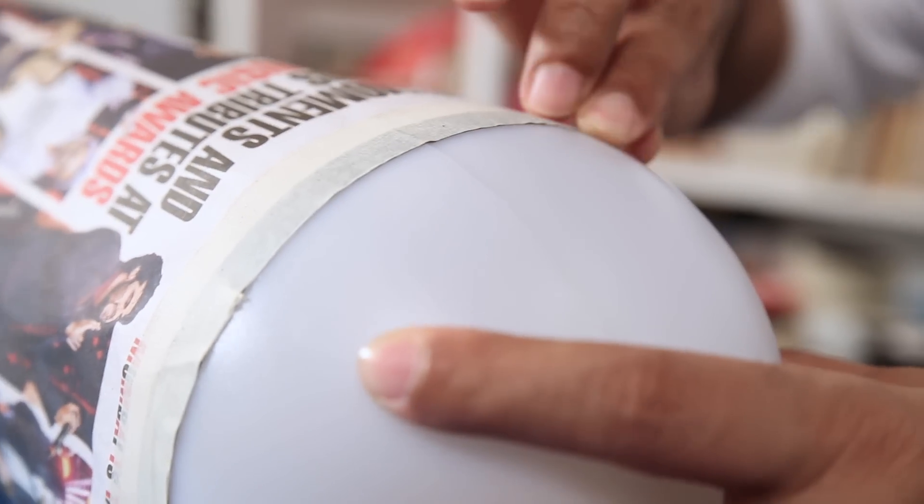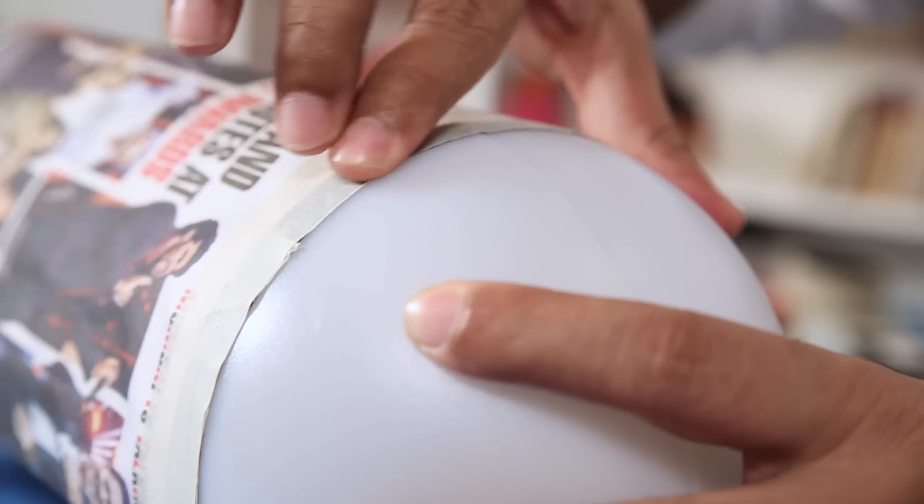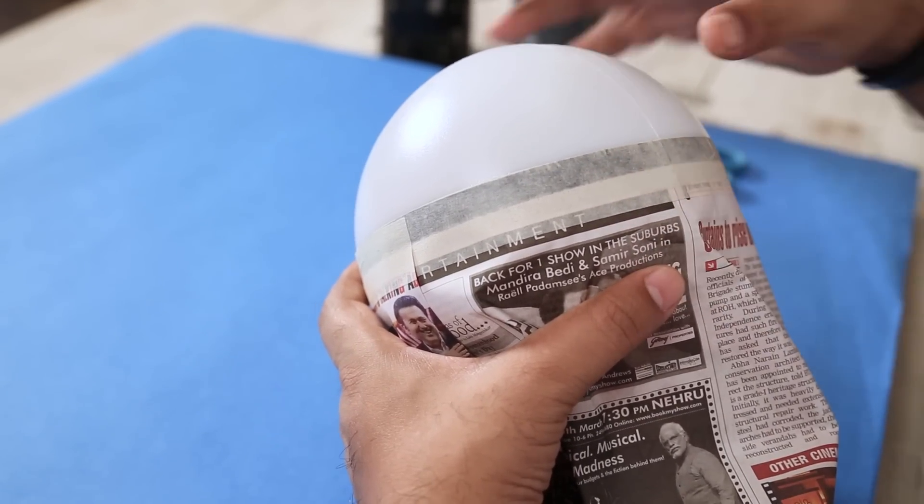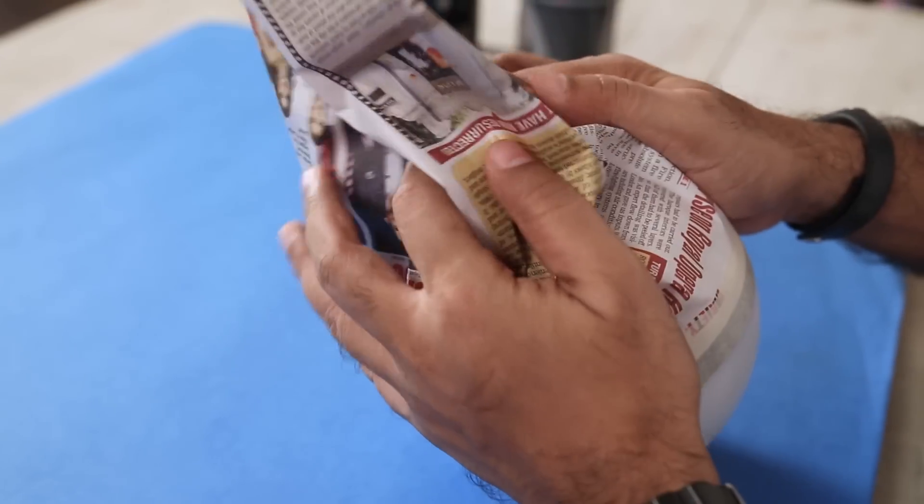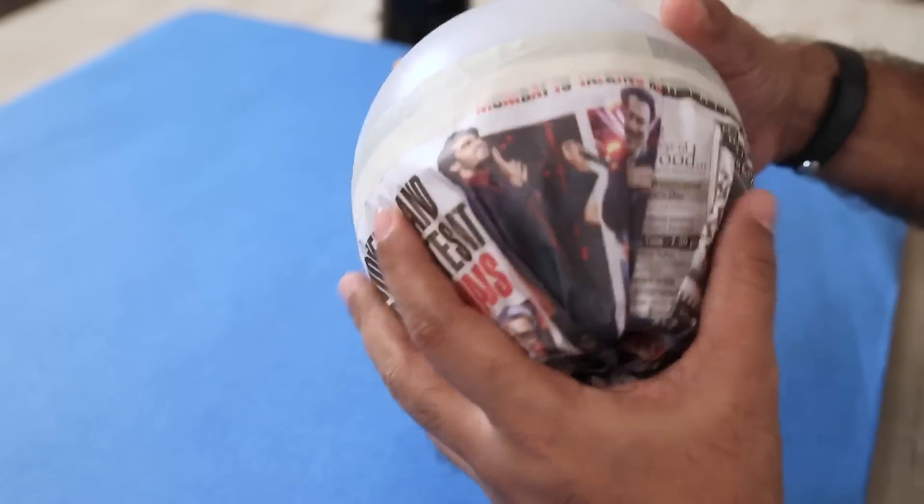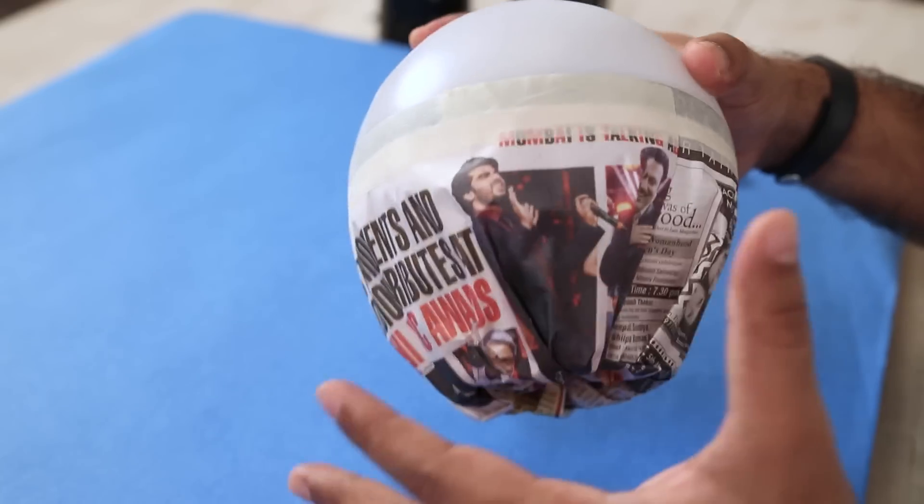Once you have lined it up, just press it down so that it sticks properly. So you can see I have covered the bottom half of the ball. Now the extra newspaper, I'll just push inside so that this whole section is nicely covered and nicely masked.